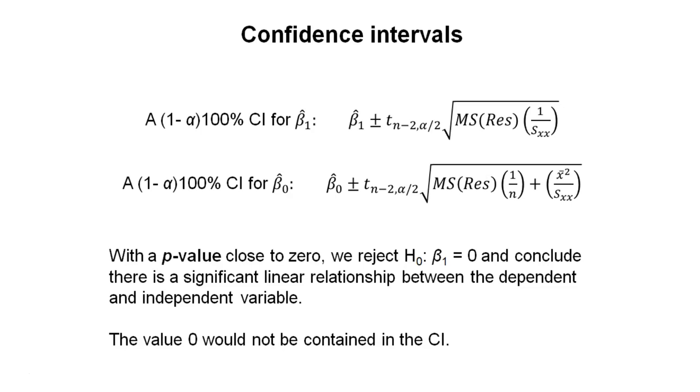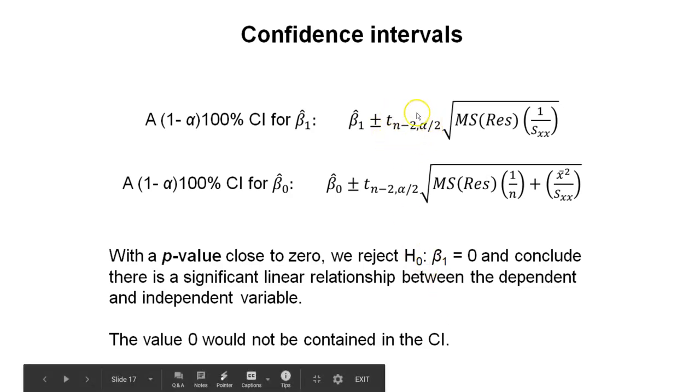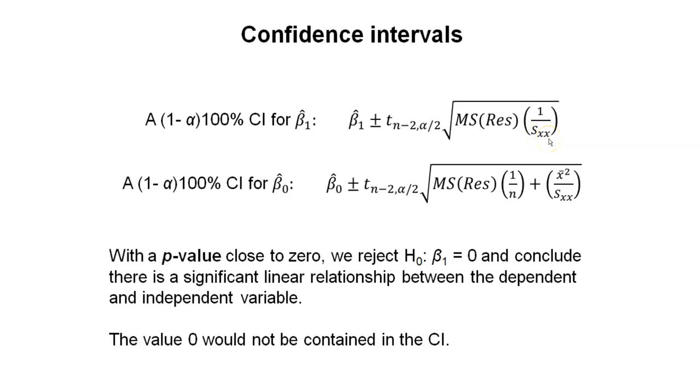We could set our level of alpha, which would rely on what our confidence interval should be. Then we need some value of t from the t-table, we need to know what the residual mean square is, and we need to know what s sub xx is. But if we've already calculated the slope and intercept, we probably already have these values. So we could calculate a confidence interval around the values for beta 1 hat and beta 0 hat.